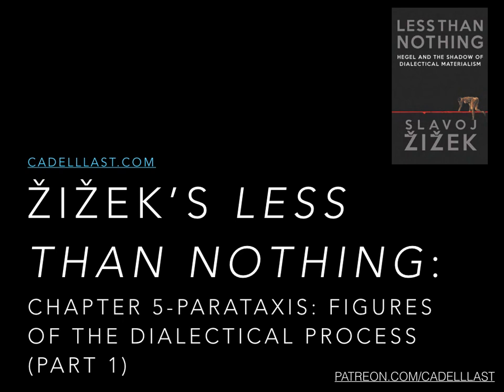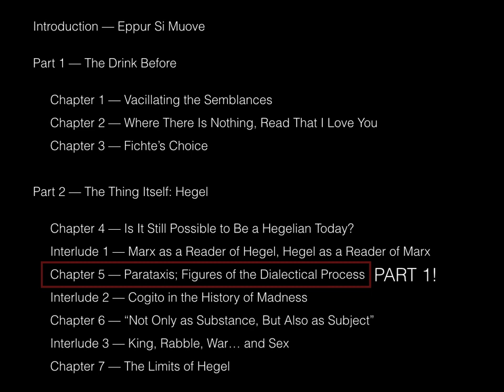Welcome to Lecture 9 of Less Than Nothing, focused on Chapter 5, Parataxis: Figures of the Dialectical Process. In this video, we will be splitting the chapter into two parts. This first part will be focused on the relationship between Newtonian ontology and Kantian ontology, as well as the consequences of Kantian ontology in relation to the quartet of German idealists focused on understanding the nature of human freedom. Concepts from previous episodes, especially related to Hegelian temporality, will be essential to keep in mind.